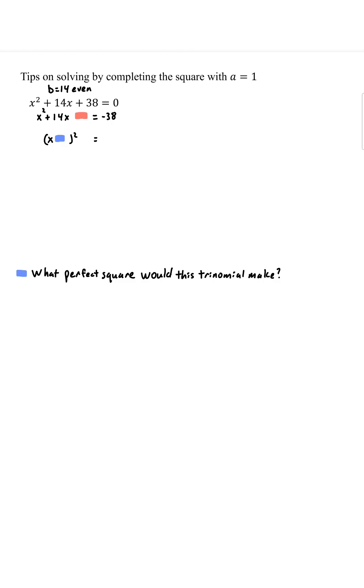So how are we going to think about the blue? What perfect square would this trinomial make? To get this, we're going to half b, and then we're going to figure out what is this mysterious number. We're going to square it.